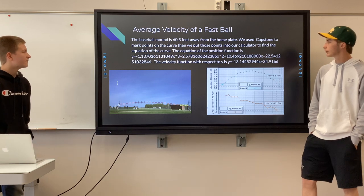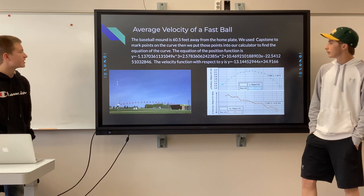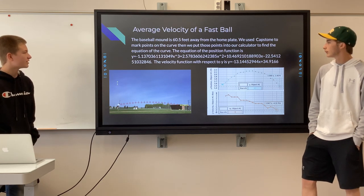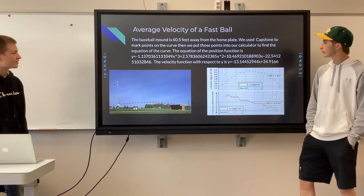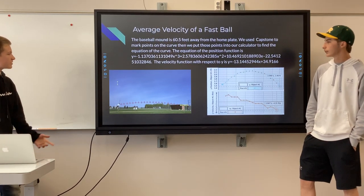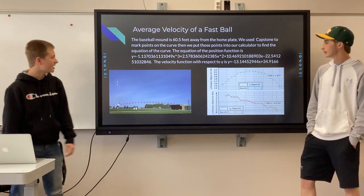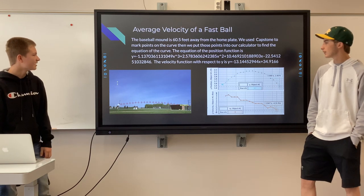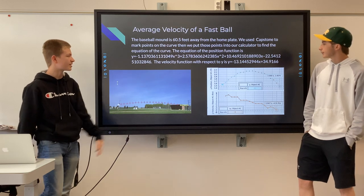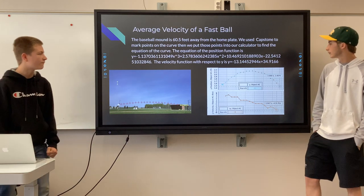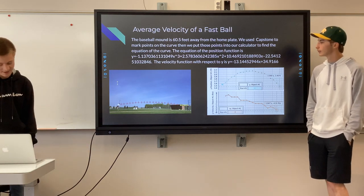The baseball mound is 60.5 feet away from home plate. We used Capstone to mark points on the curve, then put those points into our calculator to find the equation of the curve. The position function we found was y equals negative 1.13 [followed by additional terms], and the velocity function with respect to y is y equals negative 13.14452944x plus 34.9166.